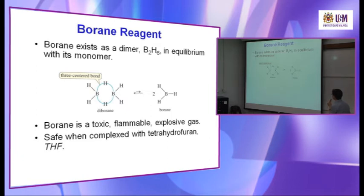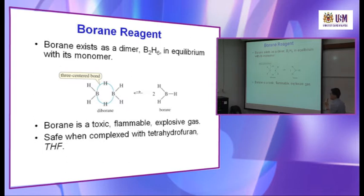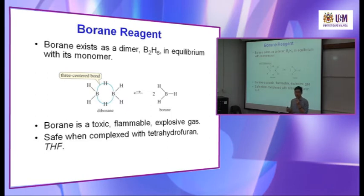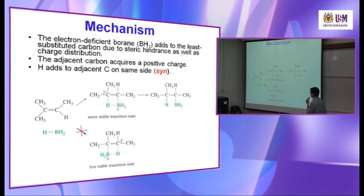Borane exists as a dimer — this is a monomer; two monomers can form a very stable dimer. Borane is a very toxic, flammable, explosive gas. So normally you use it safely as a complex with tetrahydrofuran. That's why you always see BH₃·THF — in the presence of THF the borane is more stable. So let's look at the mechanism, and then we can understand why it gives an anti-Markovnikov product.